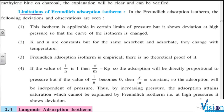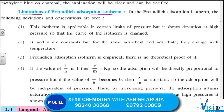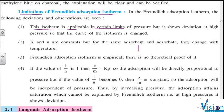Certain limitations of Freundlich adsorption isotherm - the following deviations are observed. The first one: this isotherm is applicable in certain limit of pressure. As we had seen the graph, it was like this. This pressure limit is valid there. But it shows deviation when the pressure is high. When the pressure is high, that curve of the isotherm is changed. The curve has changed, it has been flat.